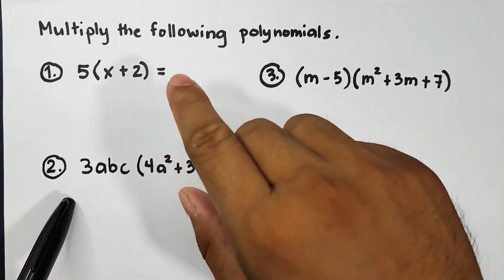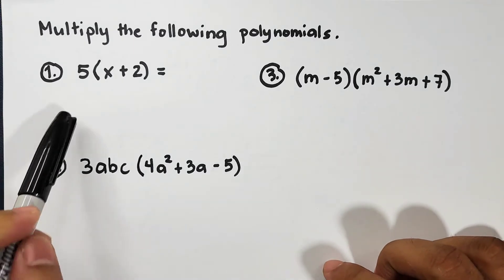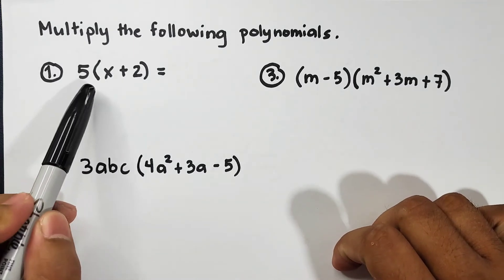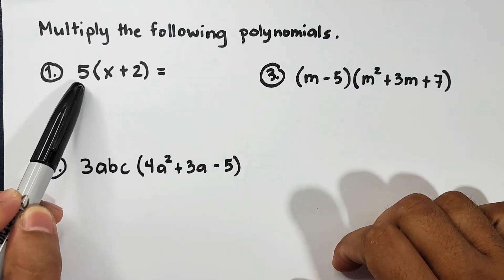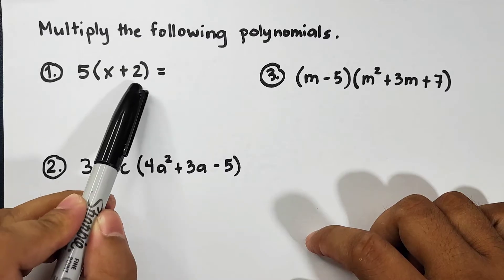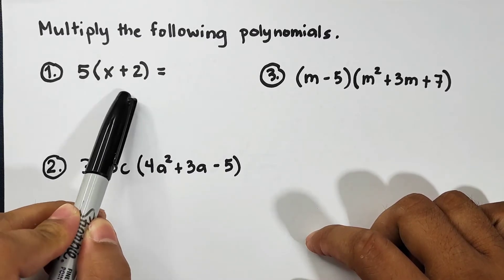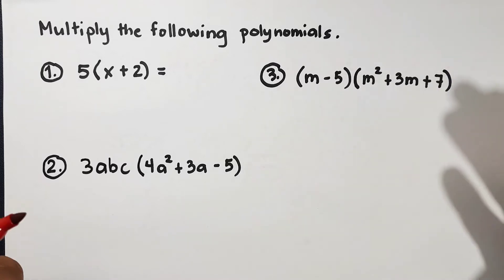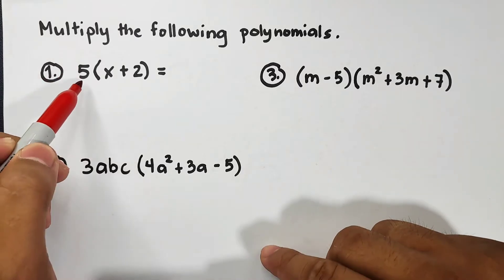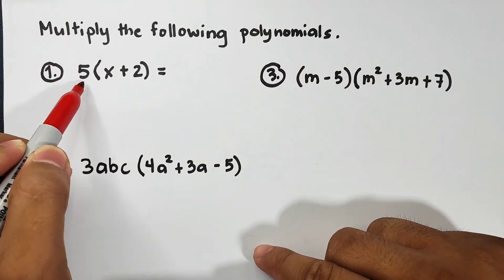In number one we have 5 times x plus 2. Here the outside expression is 5, which is a monomial, and the expression inside is a binomial. How are we going to perform the distributive property? Basically what we need to do is, from the word distributive or from the word distribute, that is the root word of the word distributive. We will distribute one by one the expression outside the parentheses and multiply it from the terms of the inside expression.